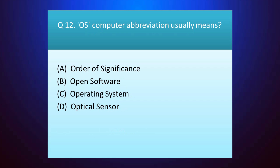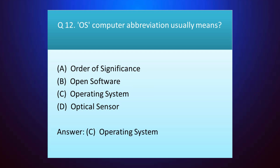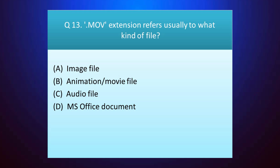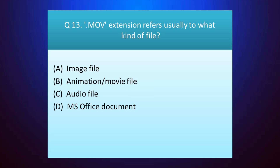Question number twelve: OS computer abbreviation usually means — your time starts. The answer is option C — operating system. Question number thirteen: .mov extension refers usually to what kind of file? The answer is option B — animation, movie file.